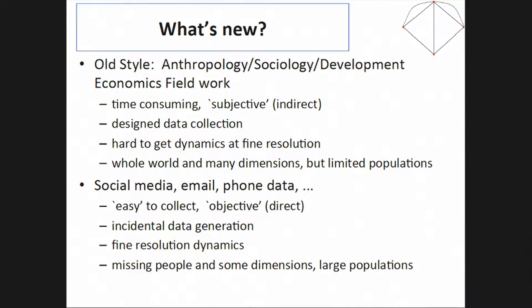The new style — social media, large scale, easy to collect — is objective in the sense that we're actually observing people's real communication: emails, calls, language used. It's incidental, meaning the data happened to be collected for other reasons and we as scientists are making use of it because it's there. But it gives us much finer resolution — things on a minute-by-minute or even second-by-second basis.